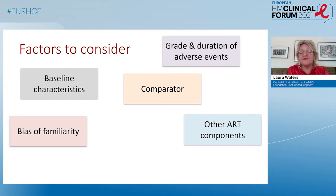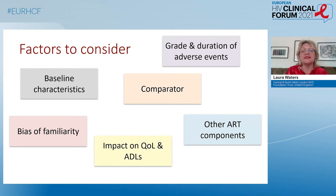The bias of familiarity means that when investigators are assigning causality in trials, if a side effect is already known, they may be more likely to attribute that to a drug, whereas if it's a new side effect not previously reported, they may be less likely to do so. And finally, rarely reported, is the impact of adverse events and toxicities on quality of life and activities of daily living.